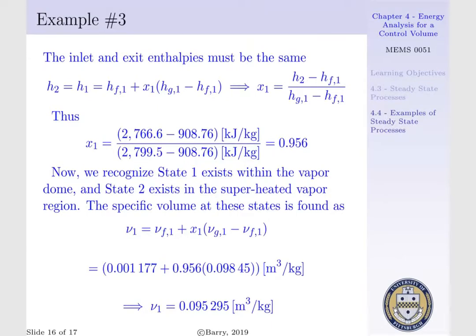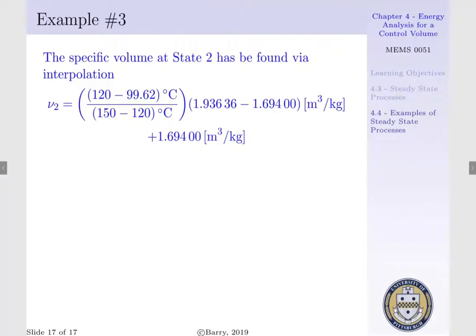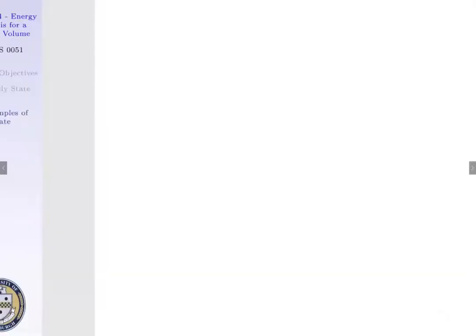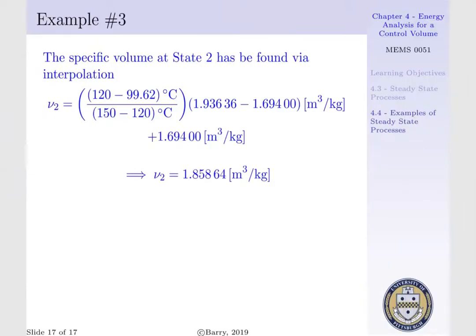Now, at state 2, we can find our specific volume via interpolation. That is, at 100 kPa, we are going to interpolate between 120 degrees centigrade, which is our exit temperature, 99.62 degrees centigrade, which is our lower bound, i.e. our saturation temperature for 100 kPa, and 150 degrees centigrade, which is our upper bound for our temperature on our superheated steam table. Determining our specific volume at state 2 via interpolation, we get a value of 1.85864 meters cubed per kg.